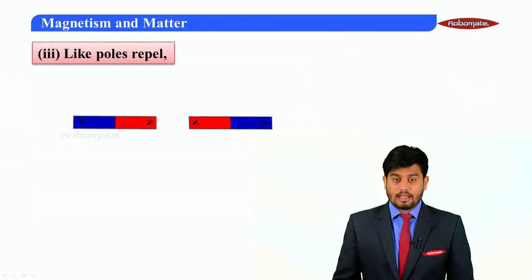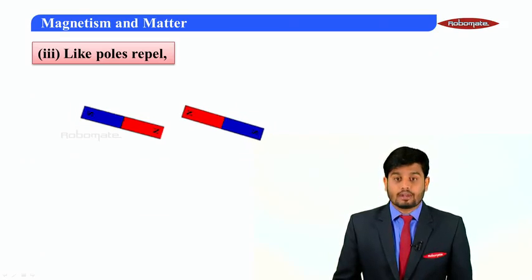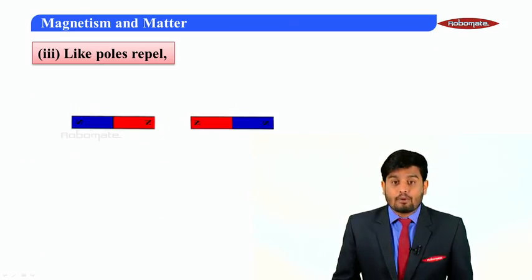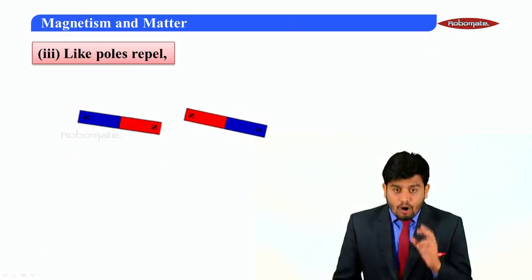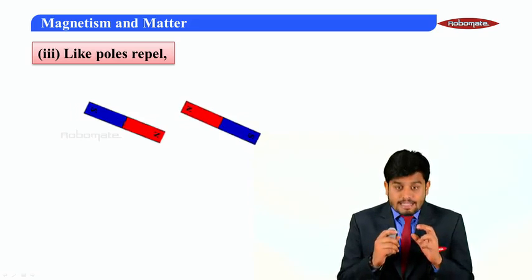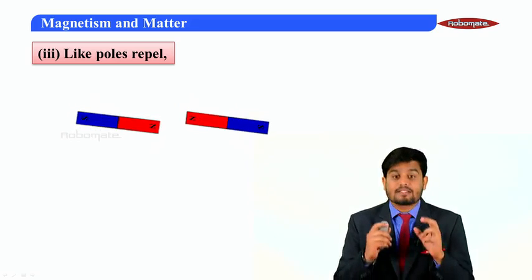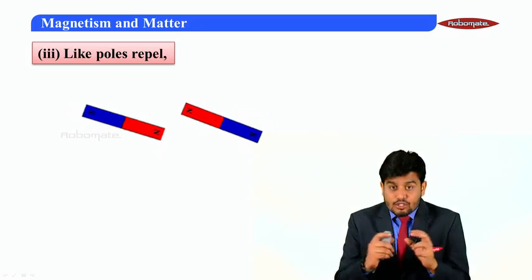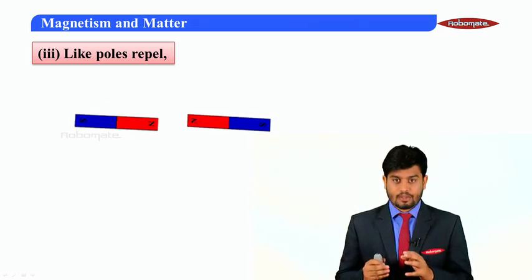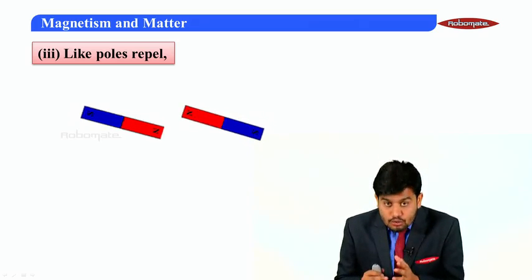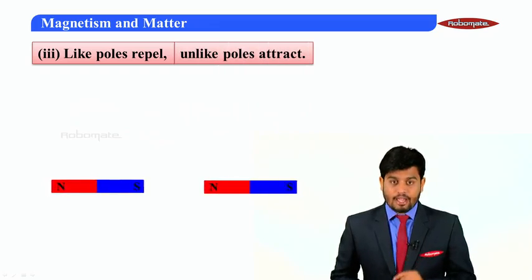Like in electrostatics, here also you can get similar properties. Like poles repel each other. If you bring two bar magnets of same poles near each other, those two bar magnets tend to repel from one another because repulsive force exists between those two same poles.